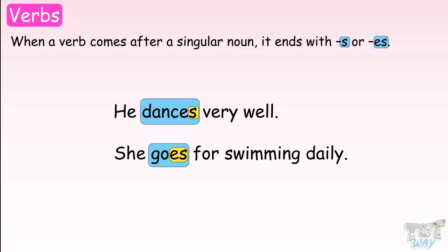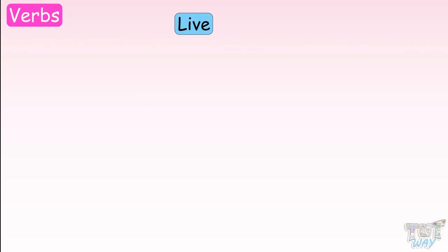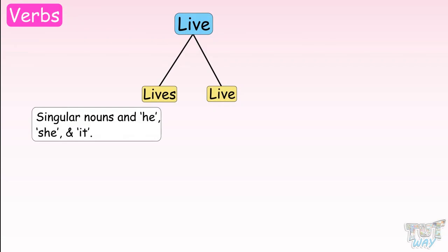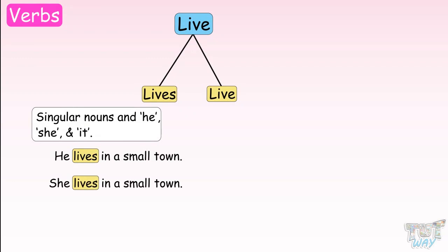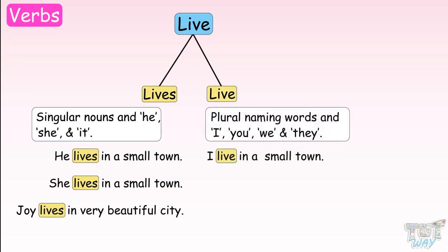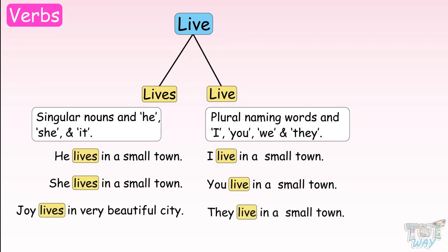Let's learn with examples. Here we have a verb, live. It has two forms: live and lives. We will use lives with singular naming words or singular nouns. For example: He lives in a small town. She lives in a small town. Joy lives in a very beautiful city. Now let's see where we use live: I live in a small town. You live in a small town. They live in a small town. Joy and Olivia live in a small town.